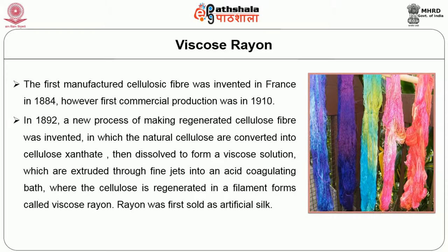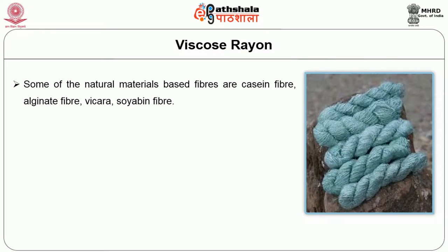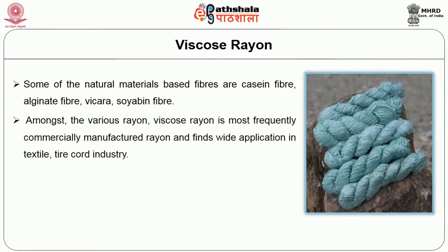Rayon was first sold as artificial silk. Some of the common rayons are Viscose Rayon, Acetate Rayon, Cupramonium Rayon. Some of the natural materials-based fibers are Casein fibers, Alginate fibers, Vicara, and Soyabean fibers. Among the various rayons, Viscose Rayon is the most frequently commercially manufactured rayon and finds wide application in textile and tire cord industry.